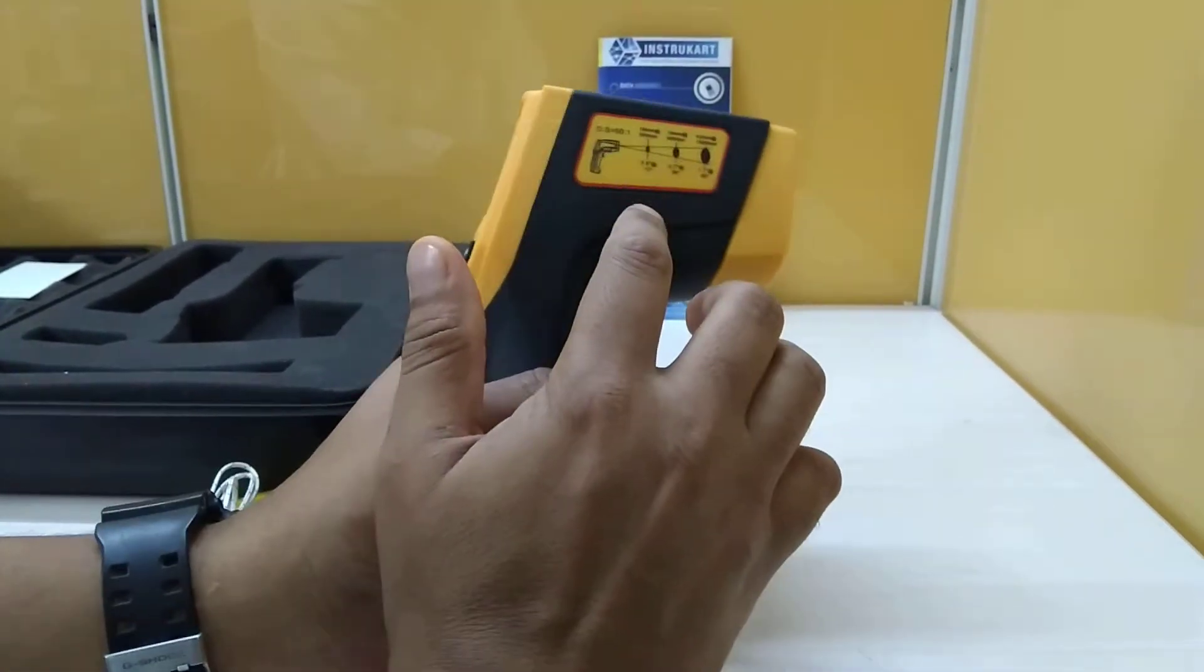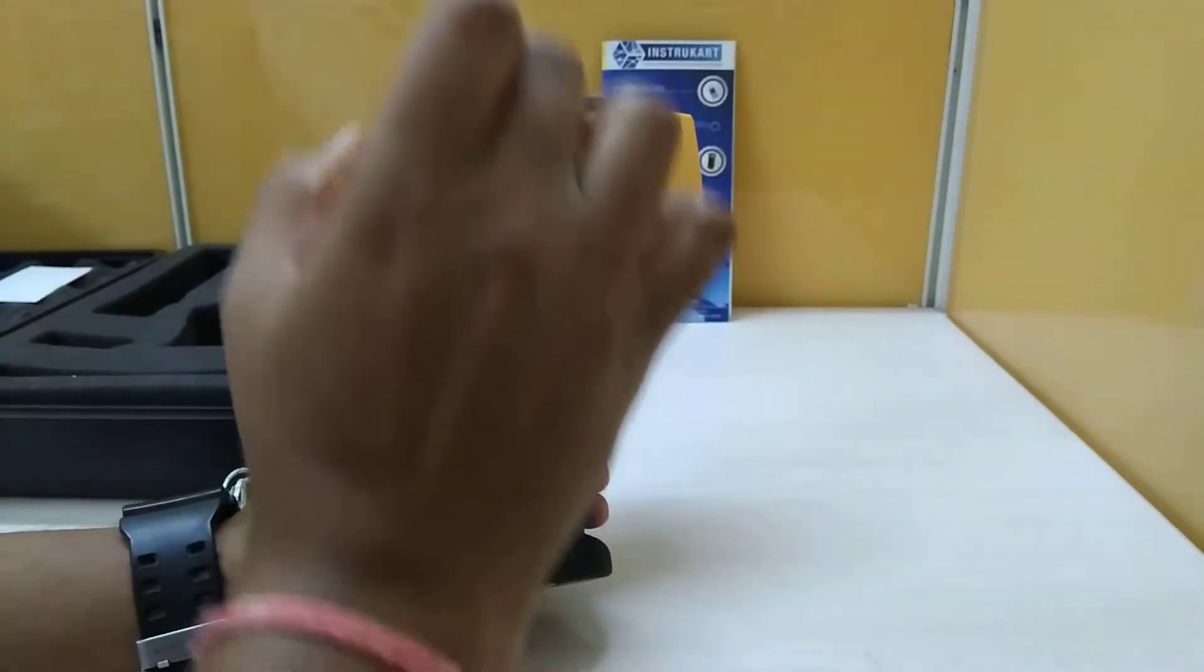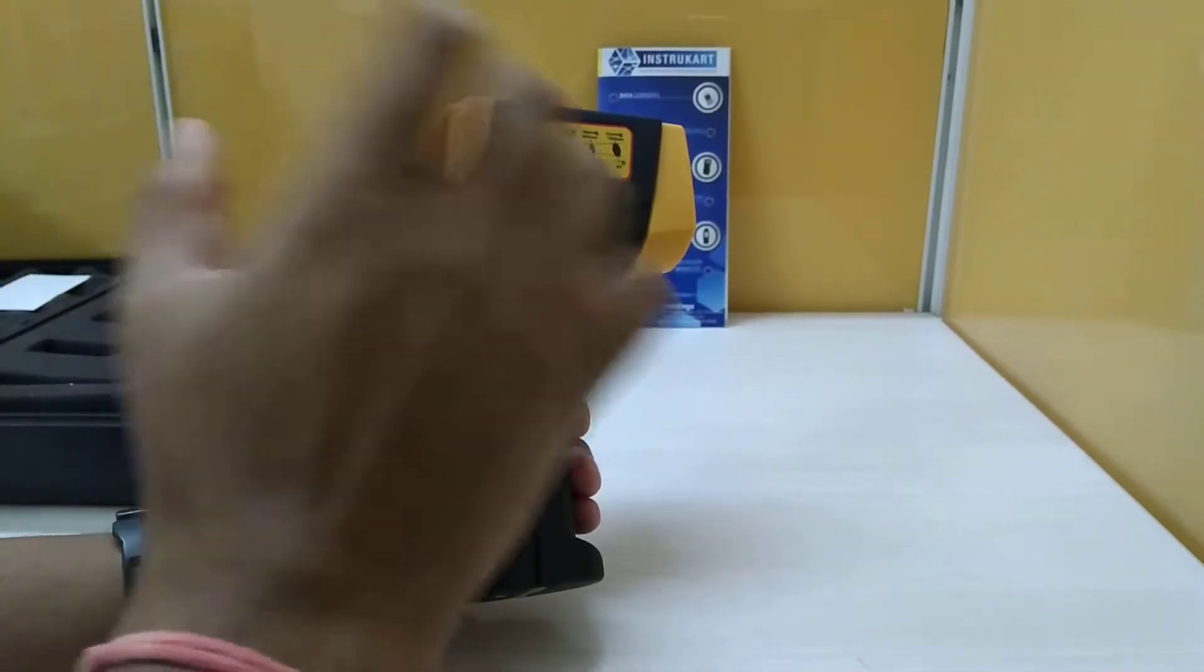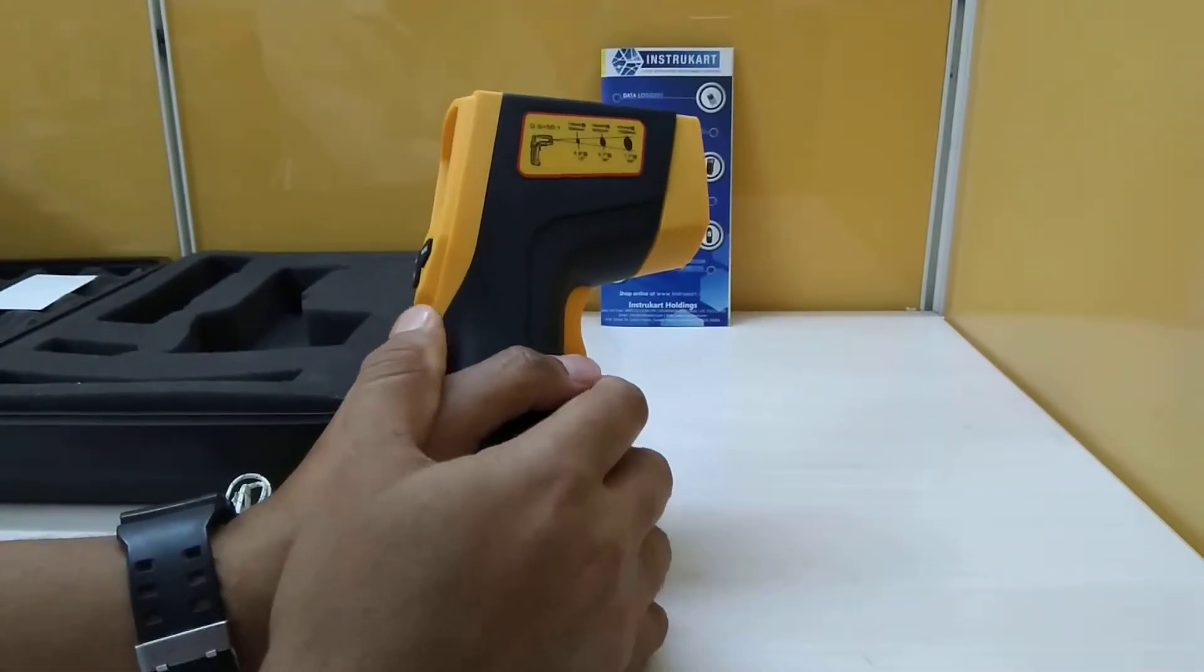So distance to spot ratio works with the pointer where you are sensing the temperature and from what distance you have to sense the temperature.